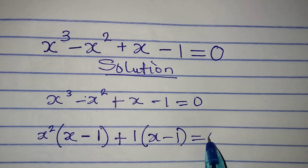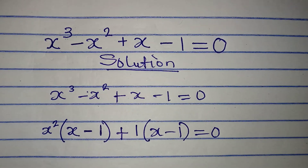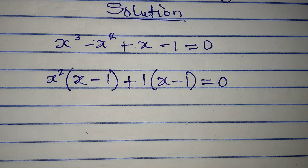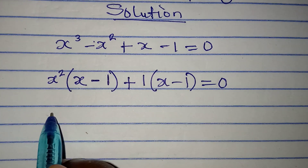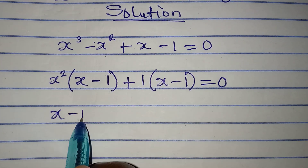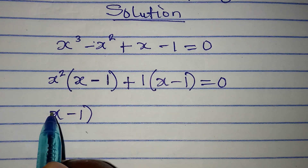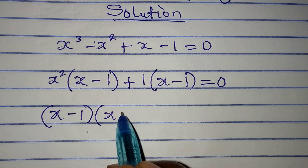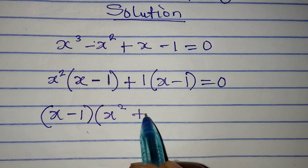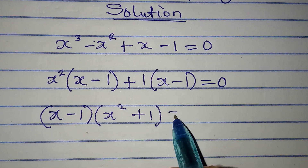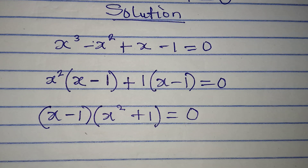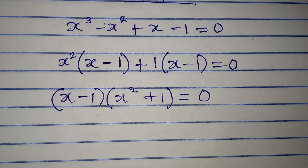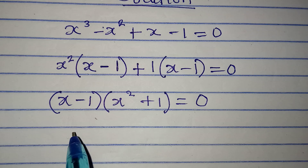This will be equal to 0. And now from here we are going to factorize so that we have x minus 1 as a common factor, and then in the other bracket I have x squared plus 1, equal to 0.